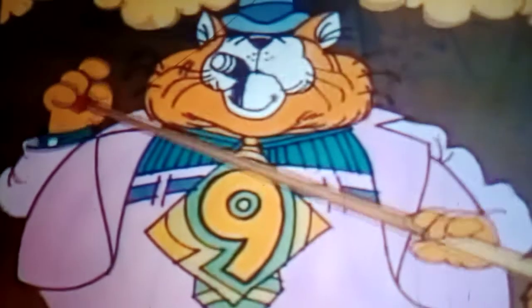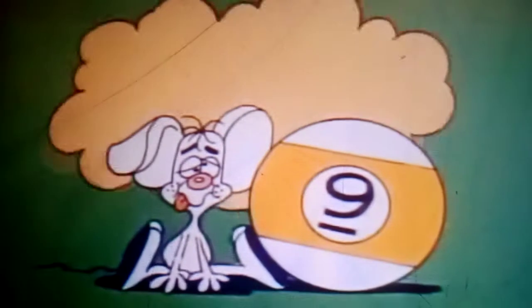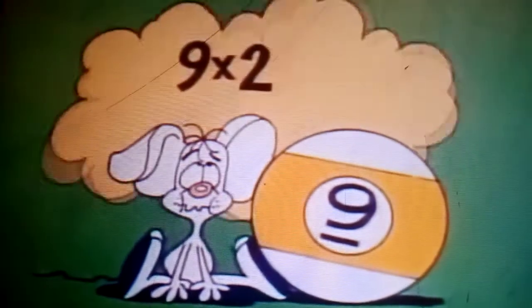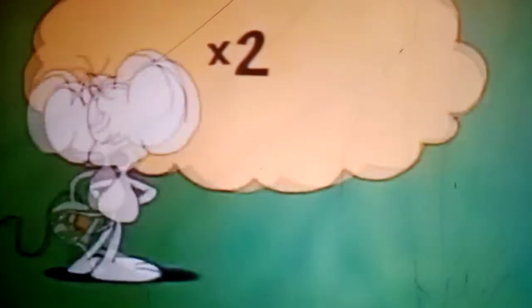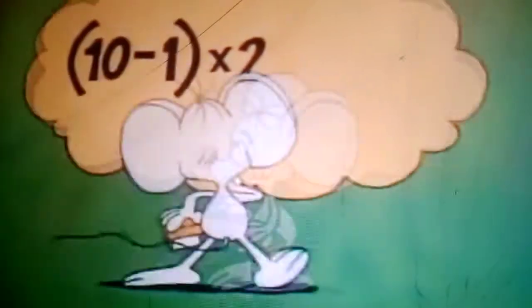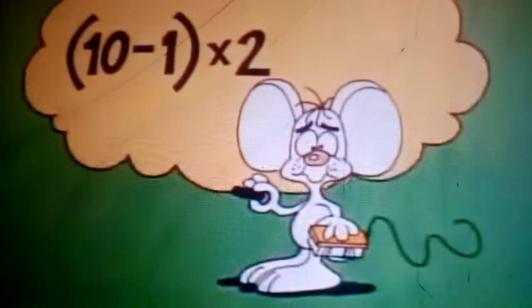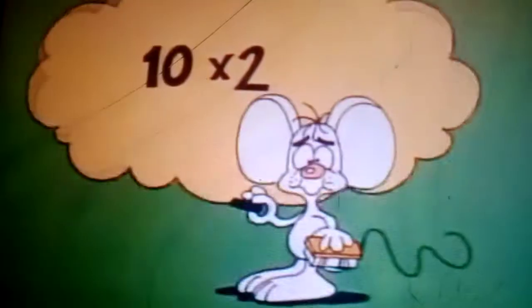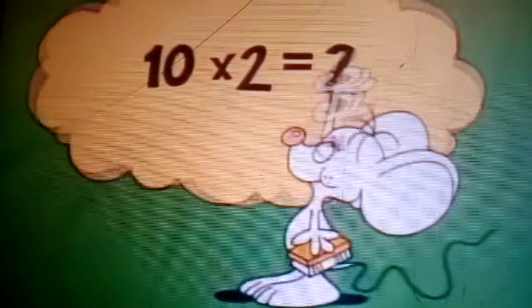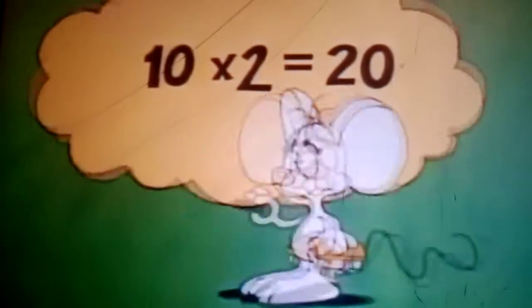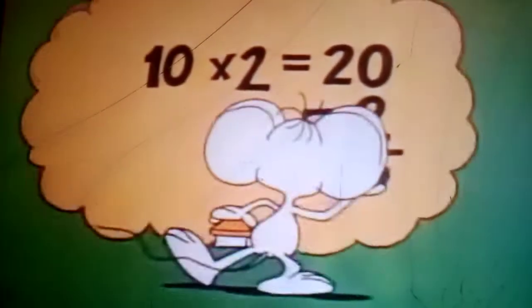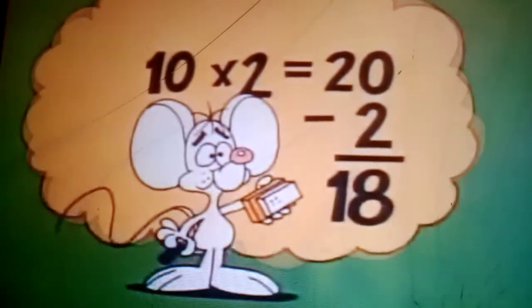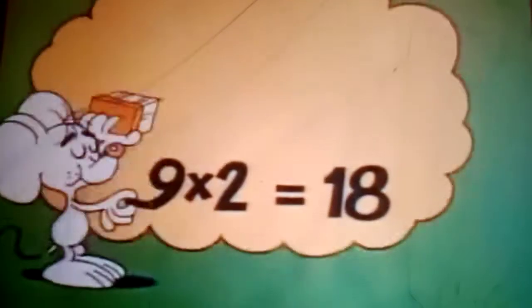Now the first thing to keep in mind when you're multiplying by 9 is that it's 1 less than 10. You see, 9 is the same as 10 minus 1. So you could multiply your number by 10 and then subtract the number from the result, and you'd get the same product as if you'd multiplied by 9.